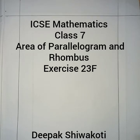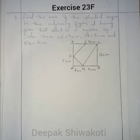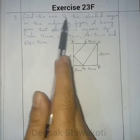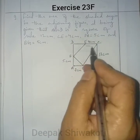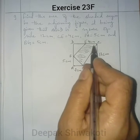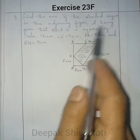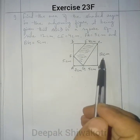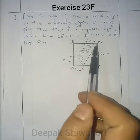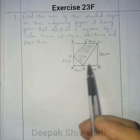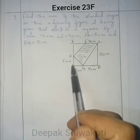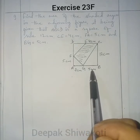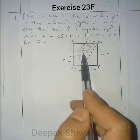Welcome to class 7 mathematics. We are in the mensuration chapter, exercise 23F, question number 9. Find the area of the shaded region in the adjoining figure. It is given that ABCD is a square of side 12 cm, CE is 4 cm, FA is 5 cm, and BG is also 5 cm. We have to find the area of this shaded region.